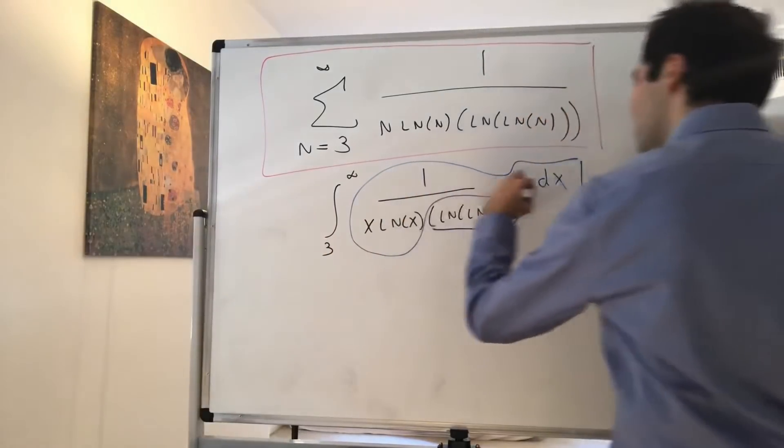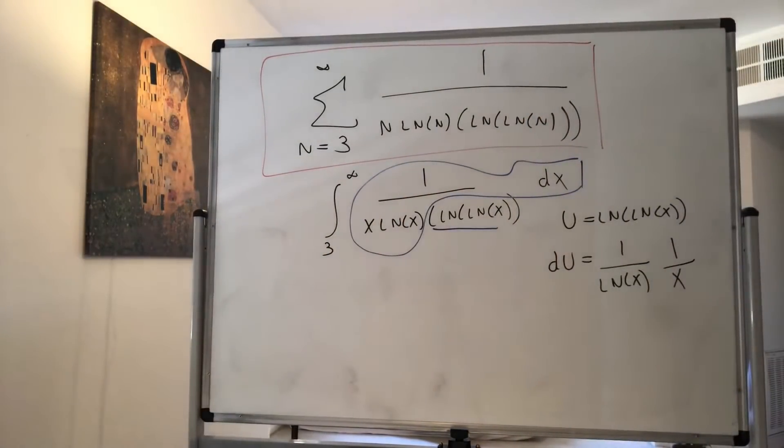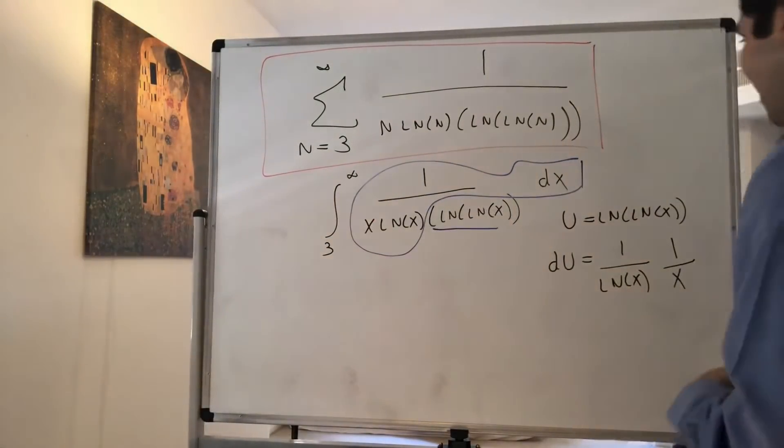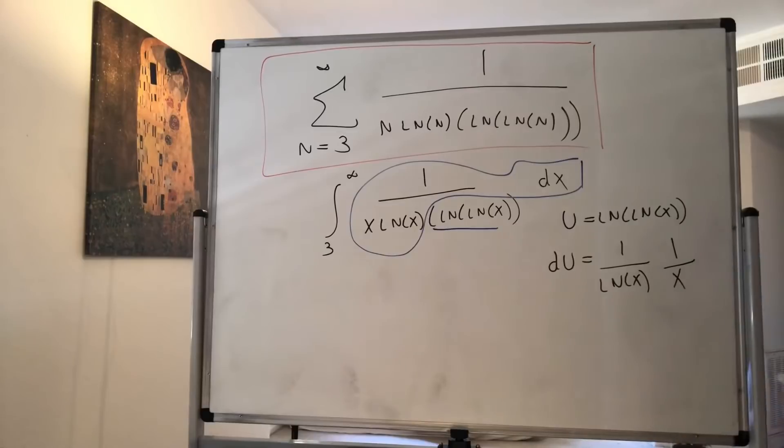Whoa! And then, well, the endpoints become ln of ln of 3, and this becomes ln of ln of infinity, which just becomes infinity.